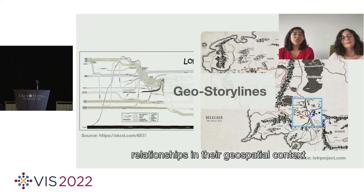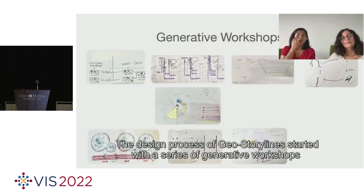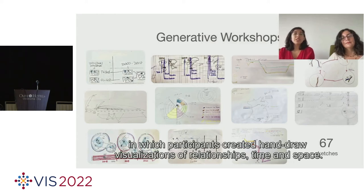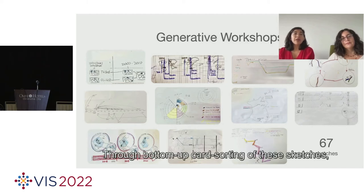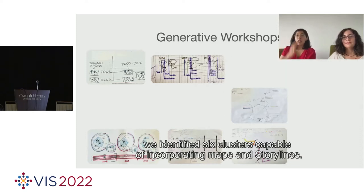Our goal with Geo Storylines is to combine maps and stories to show the dynamics of entities' relationships in their geospatial context. The design process of Geo Storylines started with a series of generative workshops, in which participants created hand-drawn visualizations of relationships, time, and space. Through bottom-up card-sorting of these sketches, we identified six clusters capable of incorporating maps and storylines.